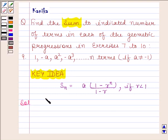The given GP is 1 minus A, A square minus A cube, and so on, up to N terms. We have to find the sum of N terms of this GP.